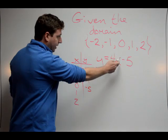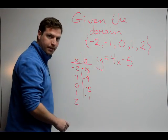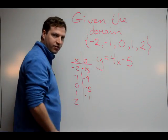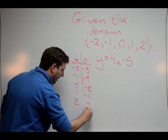So now I plug in a 1. 1 times 4 minus 5, I'm going to get a negative 1. And I can see a pattern develop here. 2 times 4 is 8 minus 5 is going to be 3.